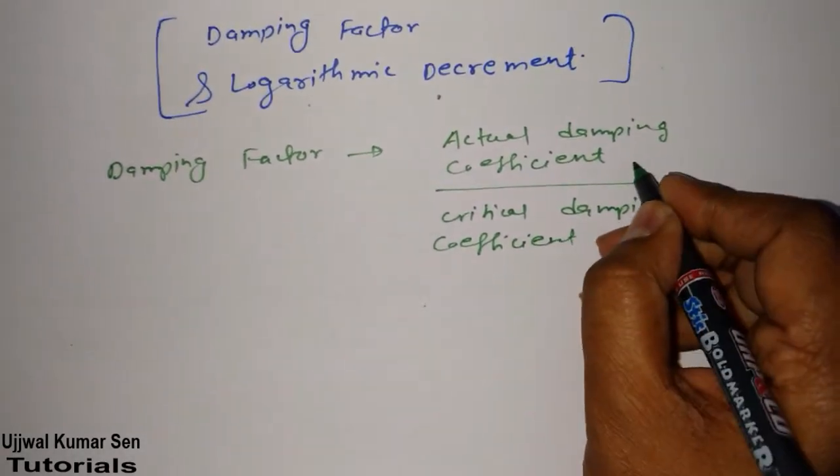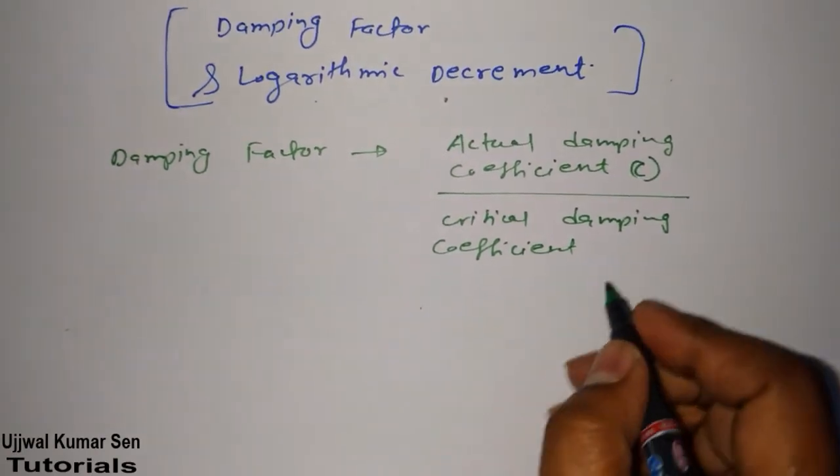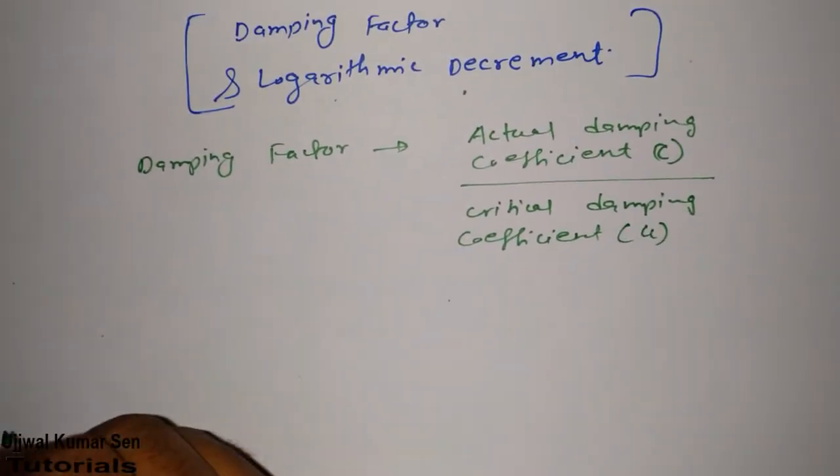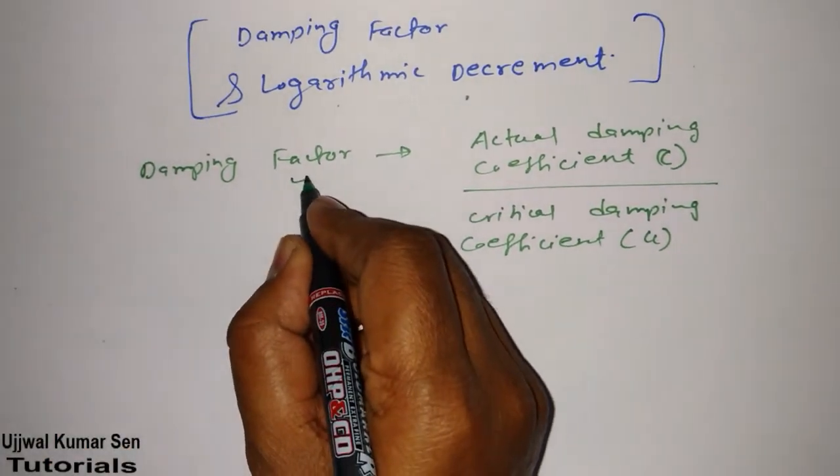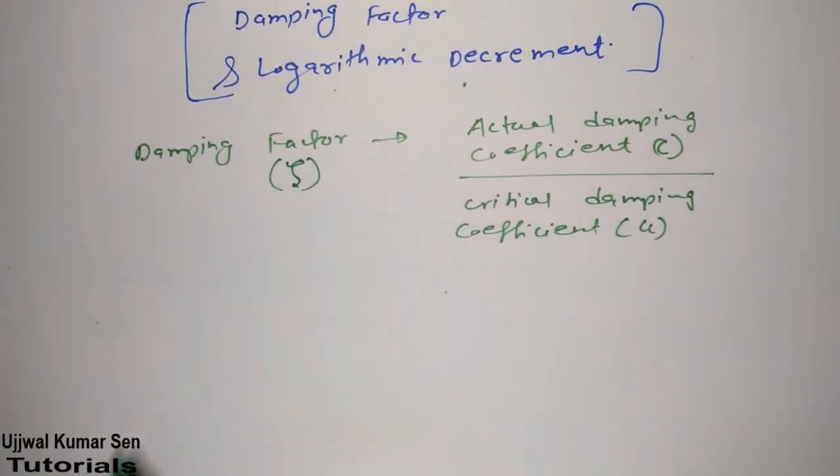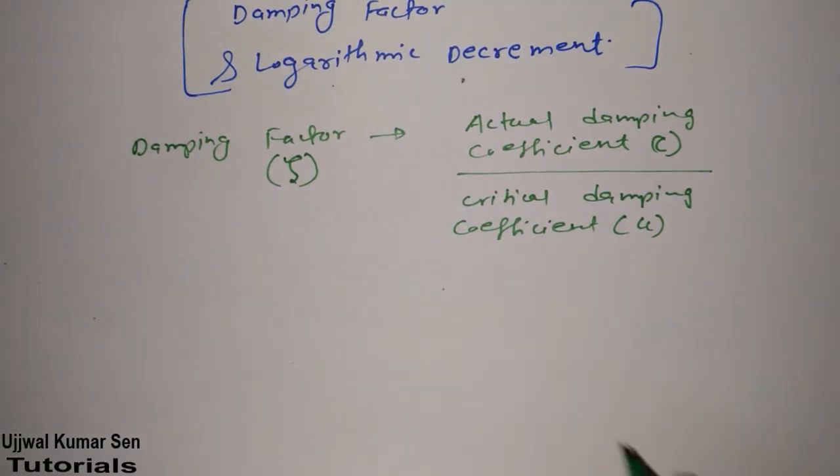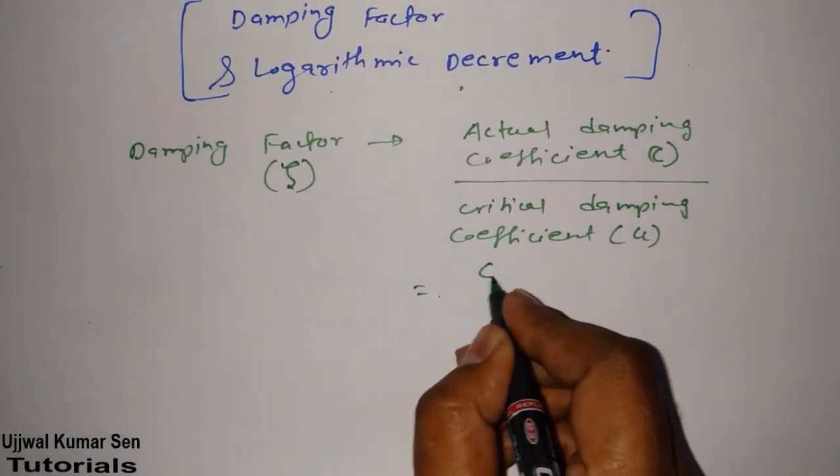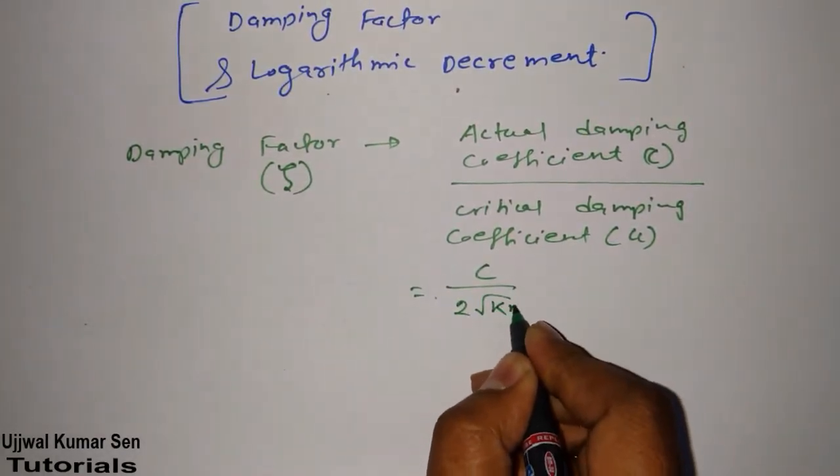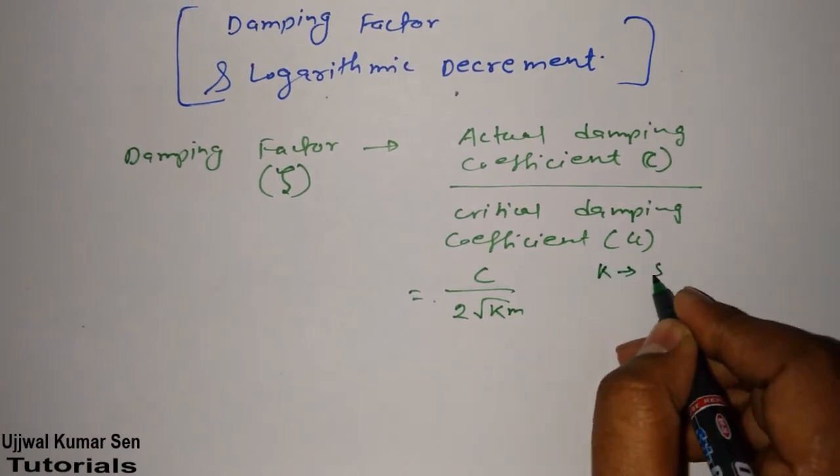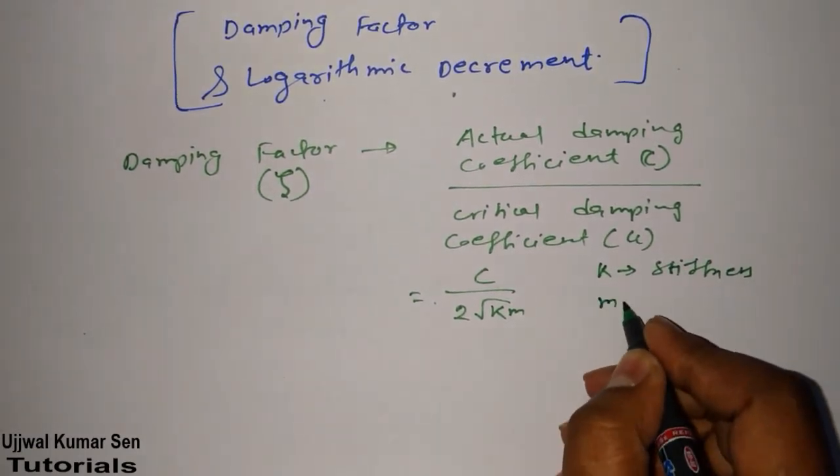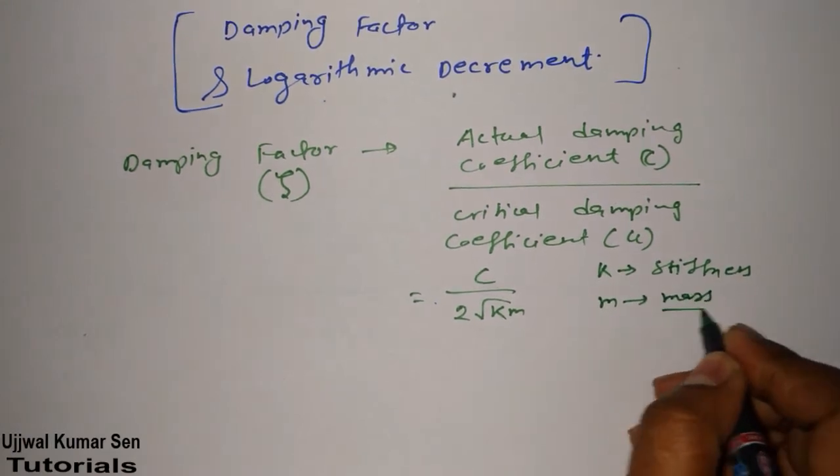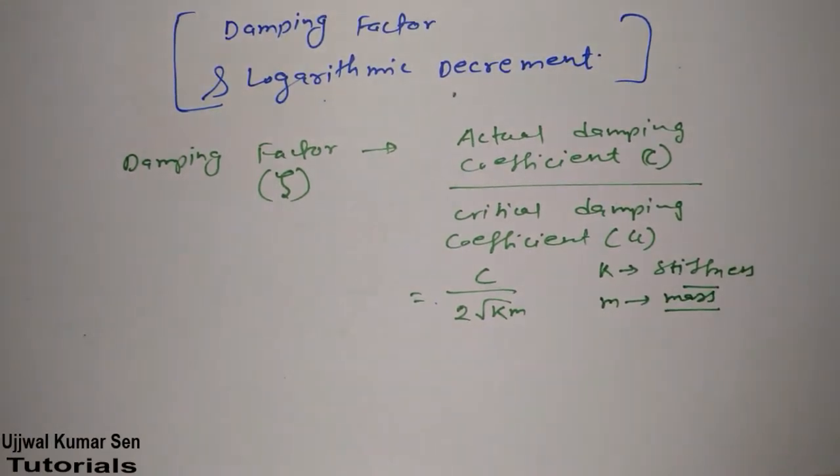And actual damping coefficient is denoted by C. Critical damping coefficient is denoted by CC. And zeta, it is denoted by zeta, damping factor. Again, we know that ζ = C/(2√Km). This K is known as stiffness. And this M is known as mass. Well, these things are most important in case of damping factor.